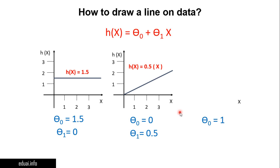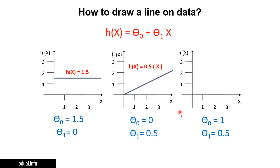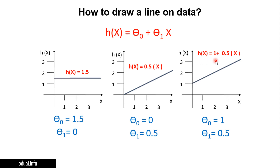When θ₀ = 1 and θ₁ = 0.5, the y-intercept is 1 so the line intersects the y-axis at 1, and with θ₁ = 0.5 the slope is 45 degrees. So the line starts at y=1 and rises at 45 degrees. This will be your equation to draw this line.